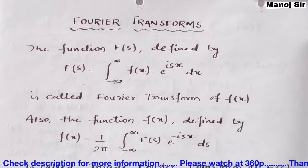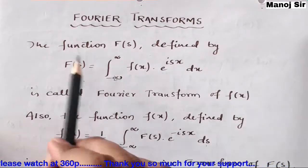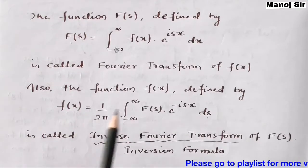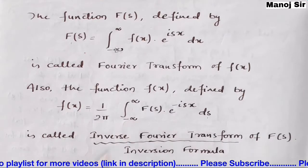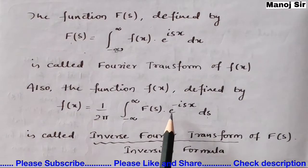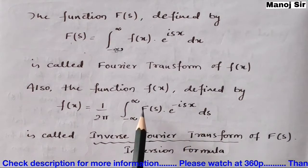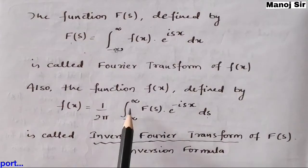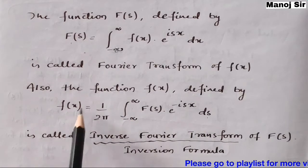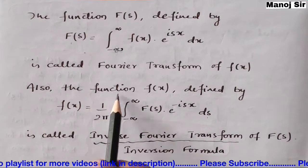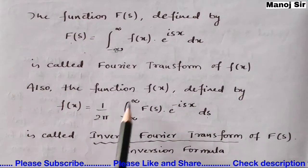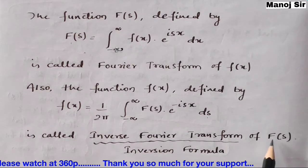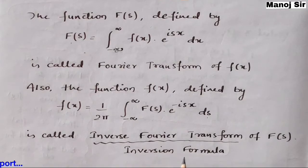Now suppose you have F(s) and you want f(x) — that means we need to find the inverse Fourier transform. The function f(x) is defined by: f(x) equals 1 upon 2π times integration from minus infinity to plus infinity of F(s) into e to the power minus i·s·x ds. This is called the inverse Fourier transform for the function F(s), and it is also known as the inversion formula.